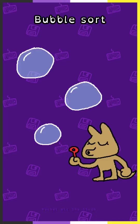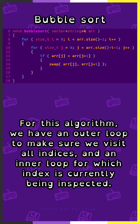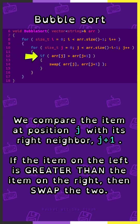Bubble Sort. For this algorithm, we have an outer loop to make sure we visit all indices, and an inner loop for which index is currently being inspected. We compare the item at position j with its right neighbor j plus 1. If the item on the left is greater than the item on the right, then swap the two.